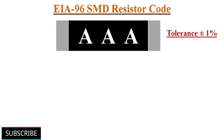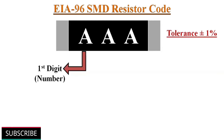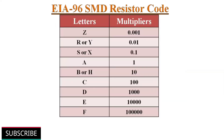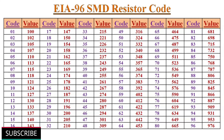Apart from the 3 and 4-digit coding systems, high precision resistors with reduced size use a new compact marking system: the EIA-96 SMD resistor marking system. These resistors have a tolerance of plus or minus 1%. The EIA-96 coding system consists of 2 numbers and 1 letter at the end. The first 2 digits represent a code indicating a resistance value with 3 significant digits, and the letter indicates the multiplier as a power of 10. Two tables are used — one for the letter multipliers and one for the 2-digit codes and their corresponding values.